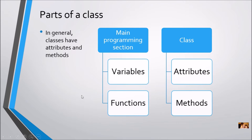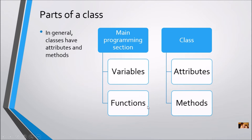In programming languages in general, classes have attributes and methods. What we've been doing up to this point hasn't really been object-oriented programming — we've been doing regular structured programming using variables and functions. When you use a class, it's its own entity separate from the program, and a class will have attributes that are like variables, and methods that are like functions.